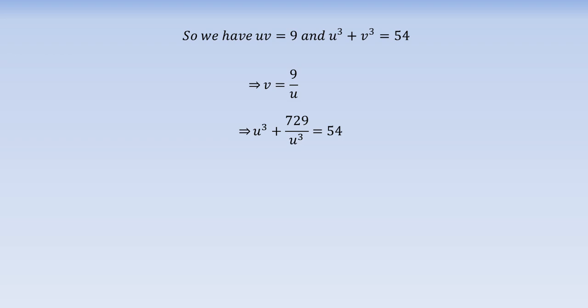The equation is (u³)² - 54u³ + 729 = 0. This can be solved easily for u³ using the standard method of solving quadratic equations to get u³ = 27.